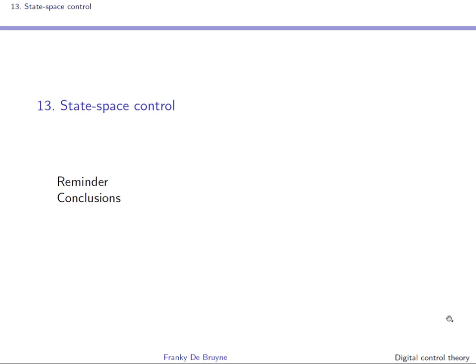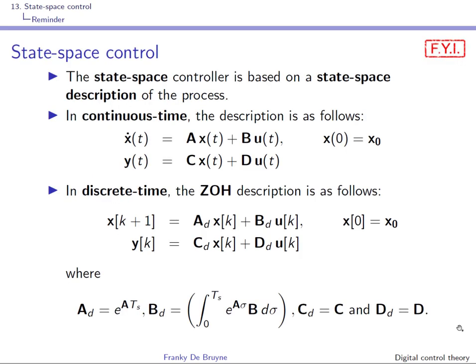The state space controller is based on a state space description of the system. In continuous time, this is what it looks like. In the vector x, you have the state of the system.